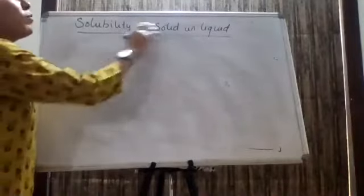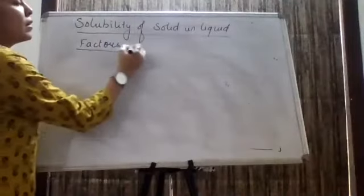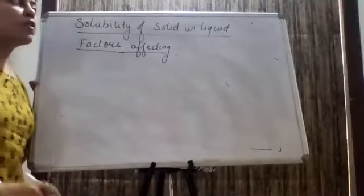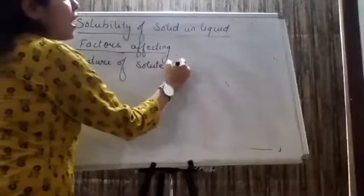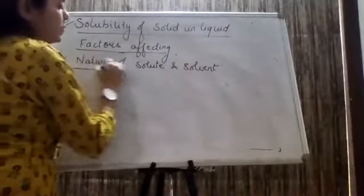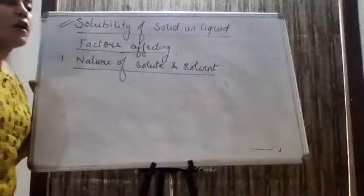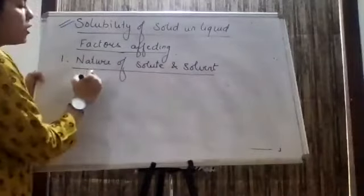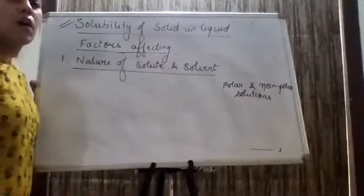This is the first part which we are going to discuss — solubility of solid in liquid. We are going to discuss what are the factors which affect dissolving any solid into liquid. The first factor is nature of solute and solvent. Before starting discussion of this topic, we have already discussed last year polar and non-polar solutions.